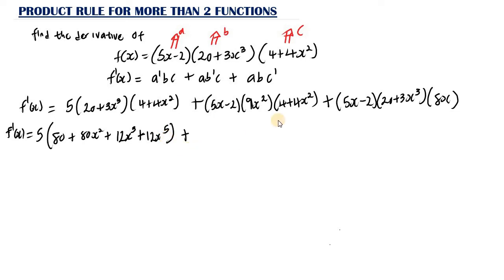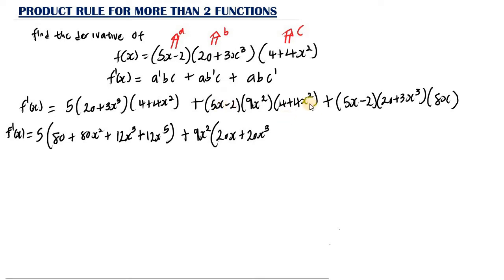Next, we take 9s squared outside and expand (5s minus 2) times (4 plus 4s squared). So: 5s times 4 gives 20s; 5s times 4s squared gives 20s cubed; negative 2 times 4 gives negative 8; and negative 2 times 4s squared gives negative 8s squared. So the second term becomes plus 9s squared times (20s plus 20s cubed minus 8 minus 8s squared).